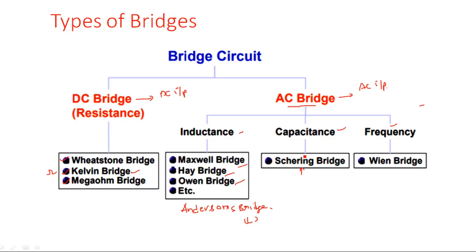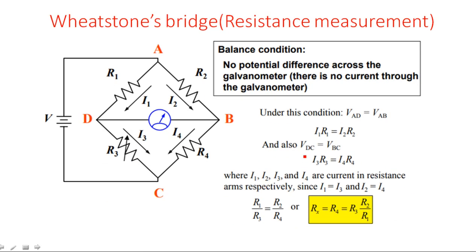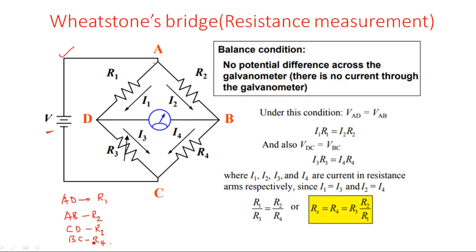Now let's look at Wheatstone's bridge. It uses a DC input supply applied to a bridge with all four arms having pure resistors — no reactive components. The first arm AD has resistor R1, the second arm AB has R2, the third arm CD has R3, and the fourth arm BC has R4. Currents I1, I2, I3, and I4 flow through the respective arms, and a galvanometer (D'Arsonval meter) is connected.